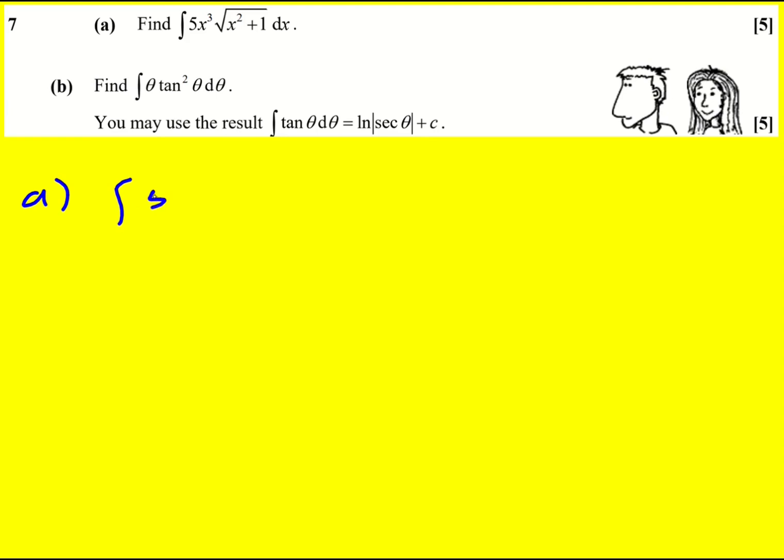First up we have the integral of 5x cubed times the square root of x squared plus 1. Now this is not one of those where you use a reverse chain rule, this thing is not the derivative of the inside, you can't just go straight there.